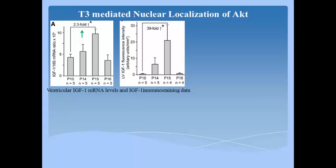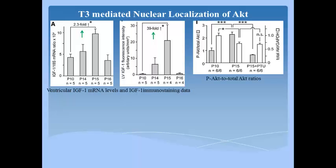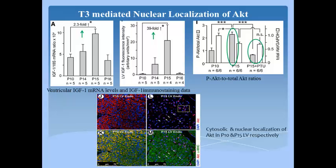Authors found that IGF-1 mRNA and IGF-1 protein expression are increased 2.3-fold and 39-fold respectively in P15 relative to P10 hearts. Activation of IGF-1 receptor requires phosphorylation that activates phosphoinositide AKT. PTU suppressed both these ratios, indicating the involvement of T3 in activating the IGF-1/AKT pathway in P15 ventricles. AKT was mostly localized in cardiomyocyte nuclei in P15 hearts, while in P13 hearts its localization was cytoplasmic, supporting a role for T3 in triggering the P15 cardiomyocyte hyperplastic burst.